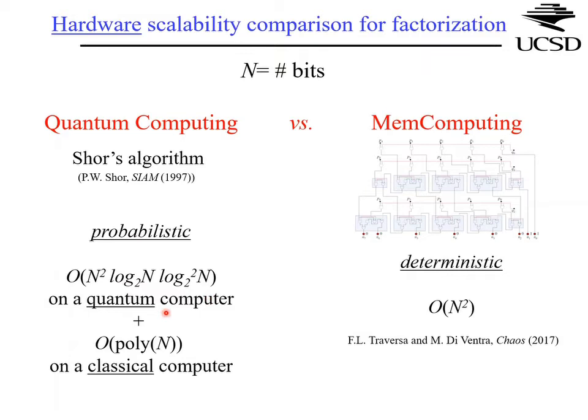Of course this hardware advantage is in hardware. In software there is no way to simulate a quantum computer, and in software simulations you have to contend with numerical errors, so you don't achieve this ideal quadratic scalability.